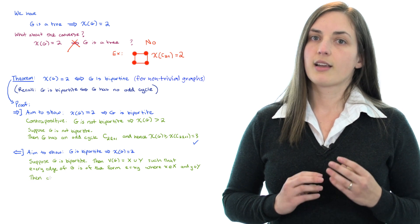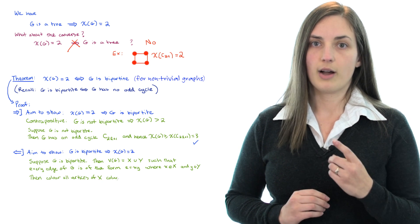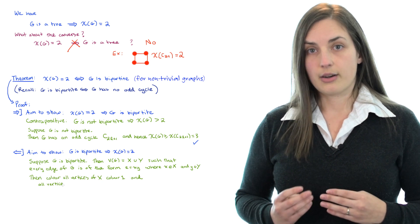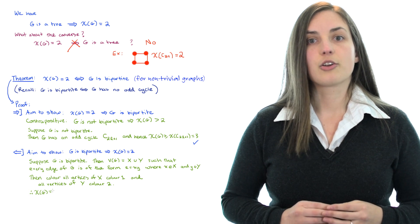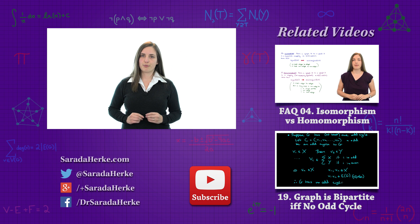But then of course we can color all of the vertices in the set X color 1 and all of the vertices in the set Y color 2. And we have a 2-coloring and so we can say that the chromatic number is equal to 2. And now we're finished the proof.